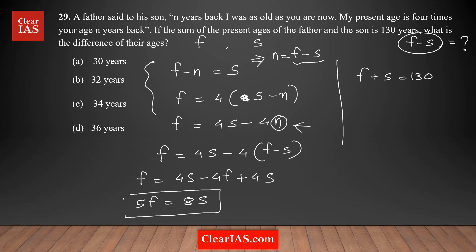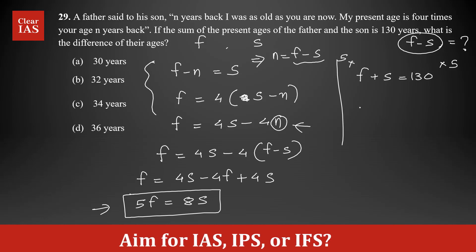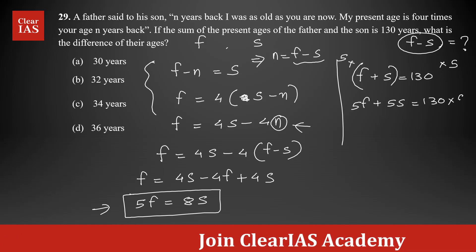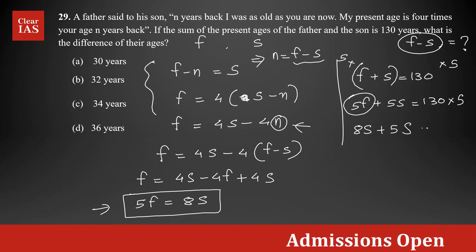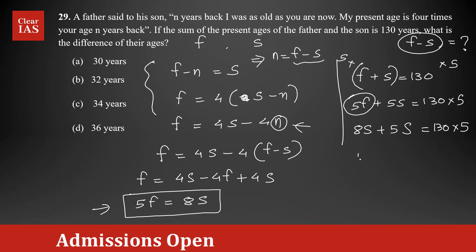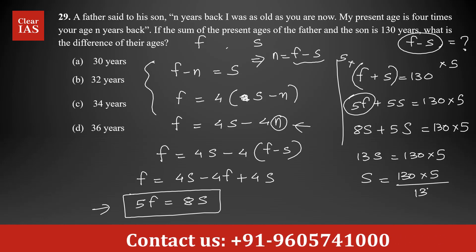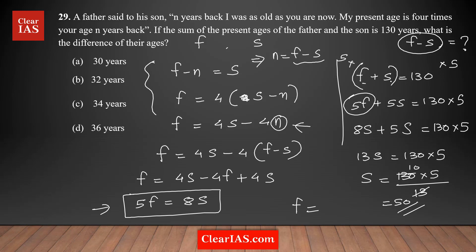Now we have 5f equals 8s and f plus s equals 130. Multiplying the second equation by 5: 5f plus 5s equals 650. Substituting 5f with 8s: 8s plus 5s equals 650, so 13s equals 650, giving s equals 50. Then f equals 130 minus 50, which is 80.